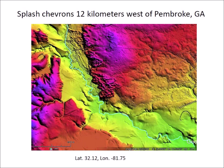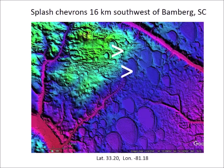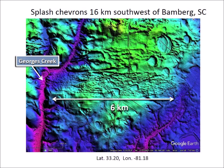Most of the Carolina Bays in this area have been destroyed by water erosion and there are just a few impact dimples on high terrain. This is an image of splash chevrons 16 kilometers southwest of Bamberg, SC. The chevrons extend for 6 kilometers from George's Creek and provide an interesting geological puzzle because the source of such large chevron dunes is not evident. The creek is rather small, and we can only speculate that perhaps an impact on a lake or swamp at this location could have provided the sand. From the law of superposition, we can determine that the chevrons were in place after some Carolina Bays had formed, and smaller ice boulders then fell to create small bays on top of the chevrons.